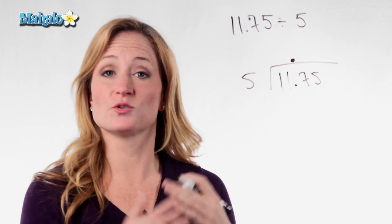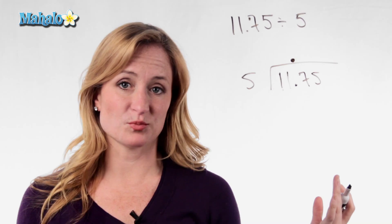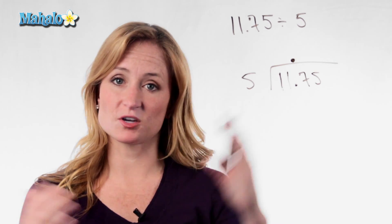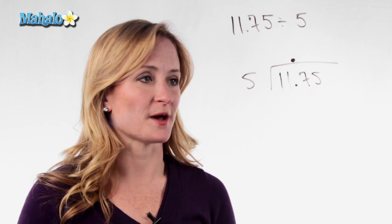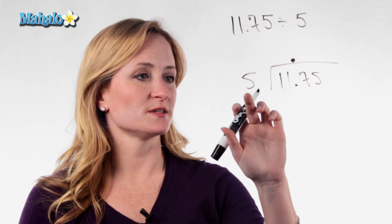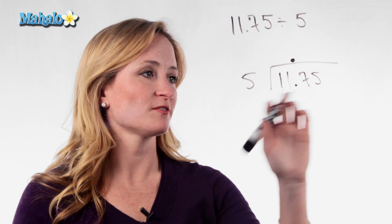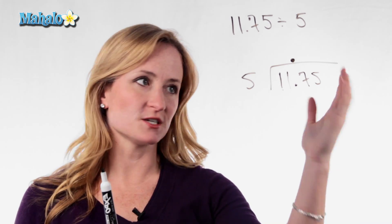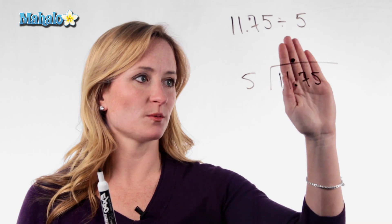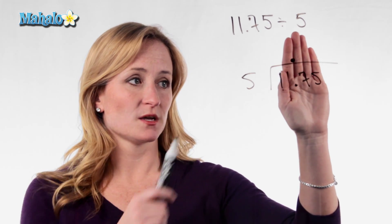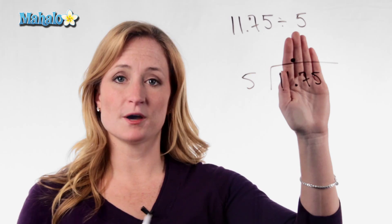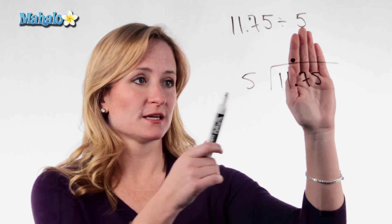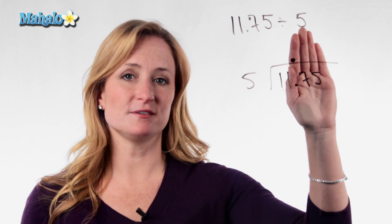Now we're going to do this as a normal long division problem. We're not going to worry about the decimal because it's already in its correct spot. So when seeing if 5 can go into this number, we don't look at the four-digit number, we go one number at a time. So can 5 go into 1? Nope. Move it over. Can 5 go into 11?